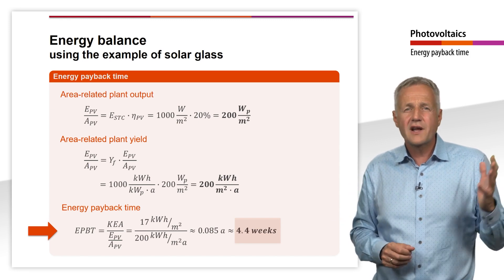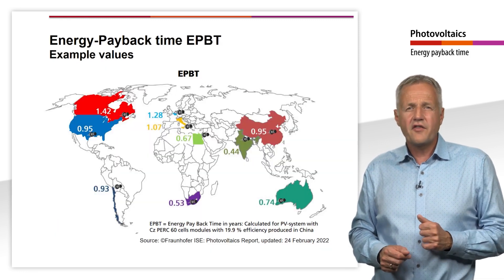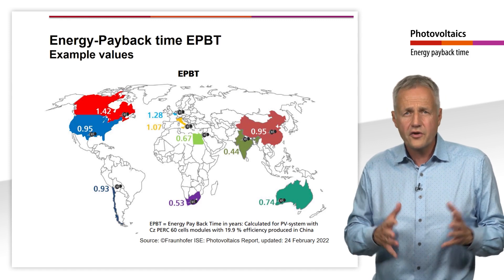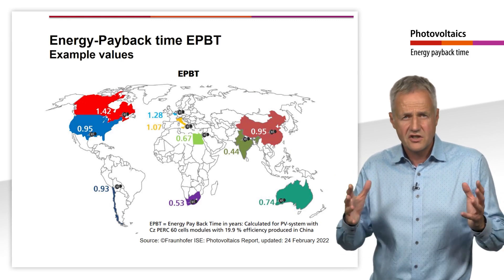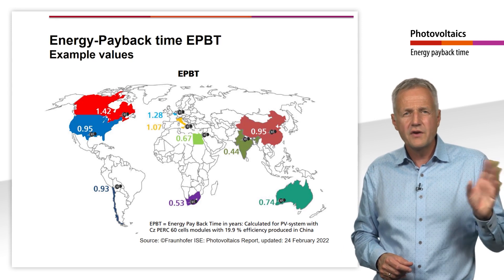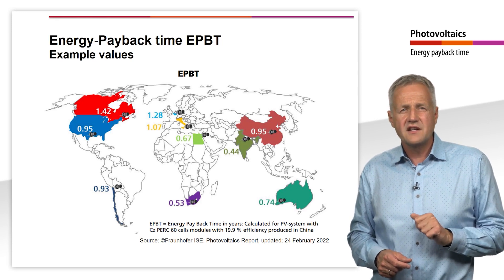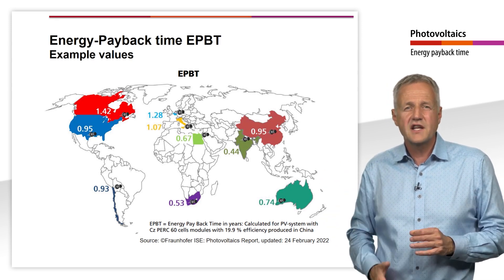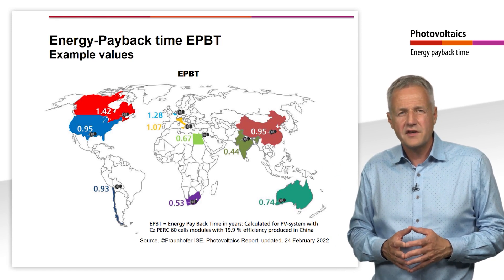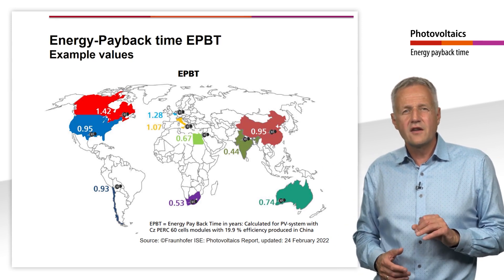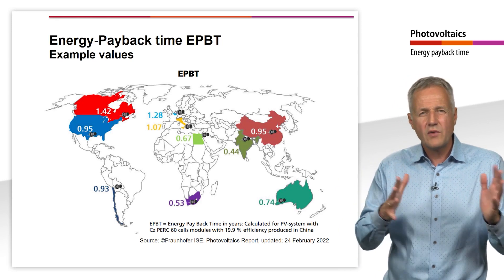We would now have to perform a similar calculation for all other components of the solar system. Fraunhofer ISE in Freiburg has done this using the example of monocrystalline PERC modules with an efficiency of 19.9% in a rooftop installation with module production in China. You can see here a world map showing the energy payback time for different countries. The lowest value is for a plant in India, where the PV system pays back the cumulative energy expenditure after just 0.44 years — in other words, less than half a year. The PV system in Canada takes the longest, at 1.42 years. In European countries, the values are between 1 and 1.2 years.